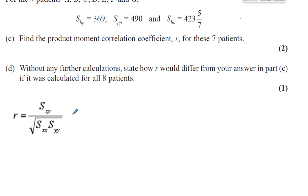So we can see that this is how they vary with each other. So that's 369 divided by the square root of, and this is how they vary with themselves. So SPP and SYY can be taken as SXX and SYY. So you have 490 multiplied by 423 and 5 over 7. And that will give you the value of R.